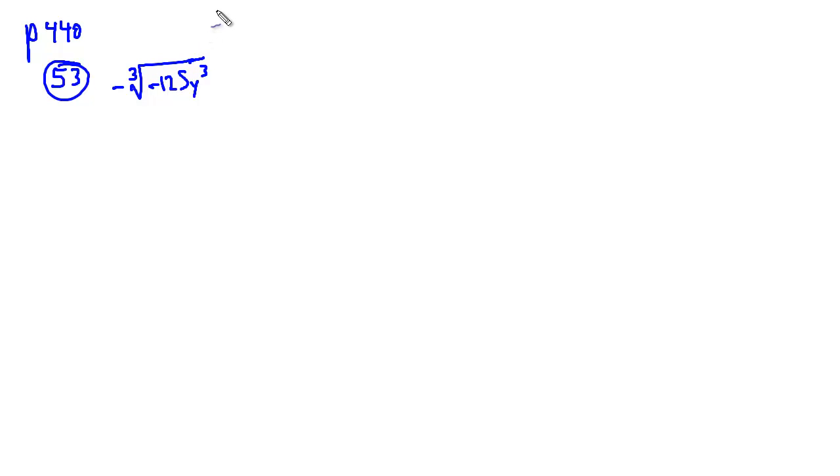Now the first thing we're going to do is ignore the negative on the outside here, and just think about what the cubic root of these two things would be. You can think about it as the cubic root of 125 and the cubic root of y cubed. I split this up because the rules of numbers and the rules of exponents are different, especially when you work with radicals. The cubic root of negative 125, you can find this on a calculator, or see that this is negative 5 times negative 5 times negative 5. So this is the negative 5 answer to that.